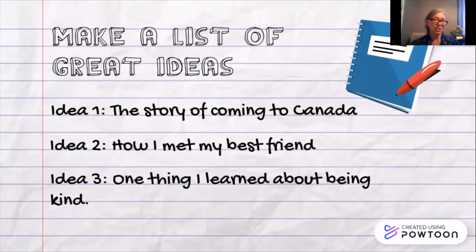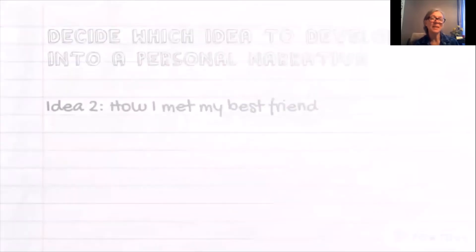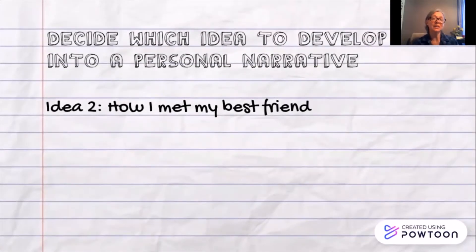The next thing to do is to make a list of great ideas. Idea number one might be to tell the story of how you came to Canada. Another idea might be how I met my best friend. And a third idea might be this one time I learned something so important about being kind. From that list, you're going to decide which idea to develop into that personal narrative. For our example today, I chose how I met my best friend.